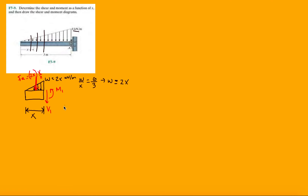Let's set up our equation. Sum of forces in Y: we have negative X squared minus V1 equals 0, which tells me that V1 equals negative X squared. My interval here is going to be between 0 and 3.